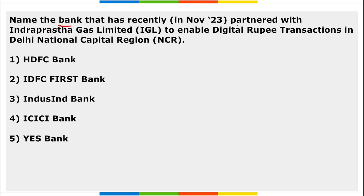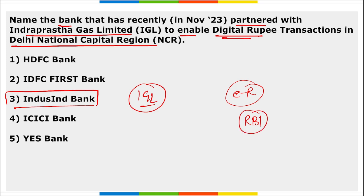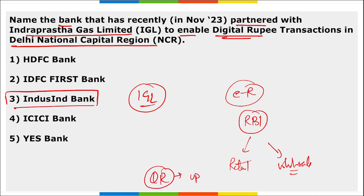Next: which bank recently partnered with Indraprastha Gas Limited to enable digital rupee transactions in the Delhi NCR? It is Indraprastha Bank. The collaboration aims to promote cashless transactions at IGL CNG stations in Delhi NCR, where customers will be able to pay quickly using QR codes through UPI. The digital rupee is the E-Rupee launched by RBI in retail and wholesale segments.